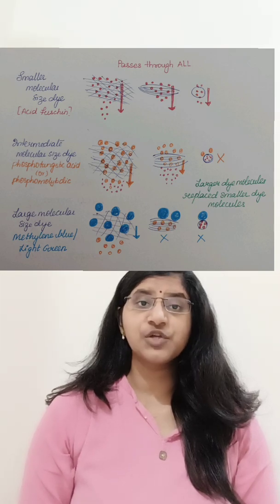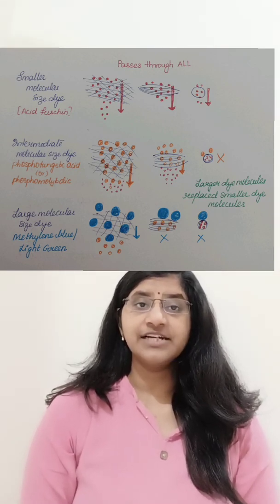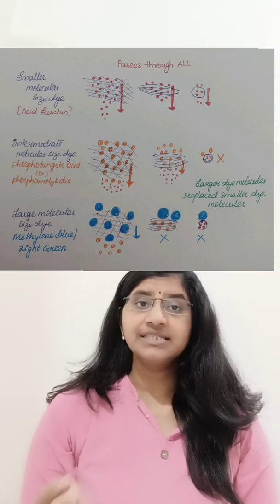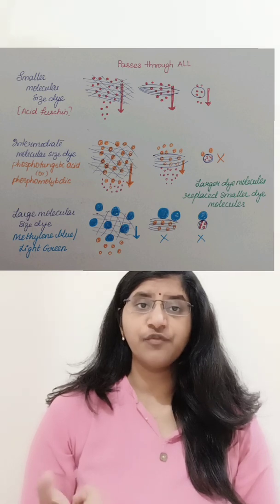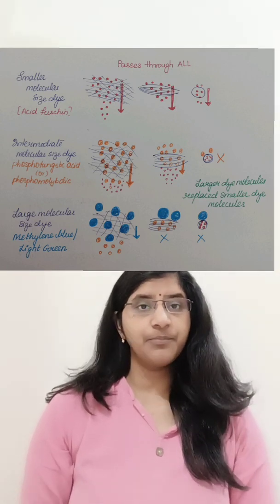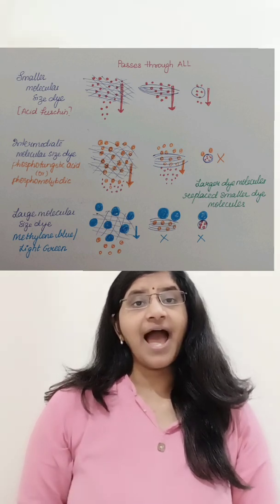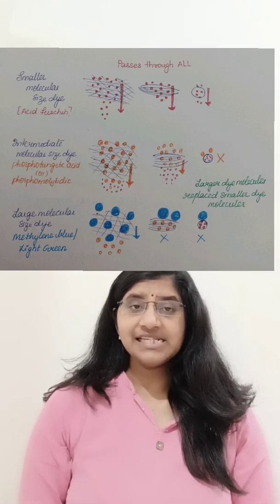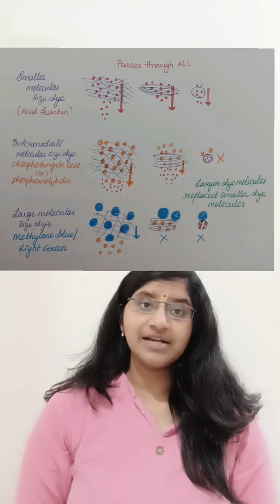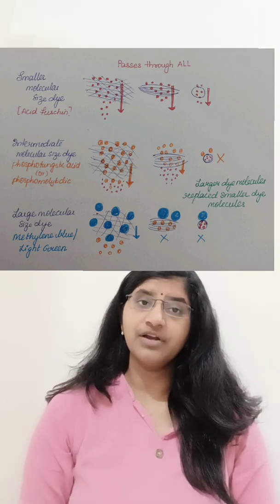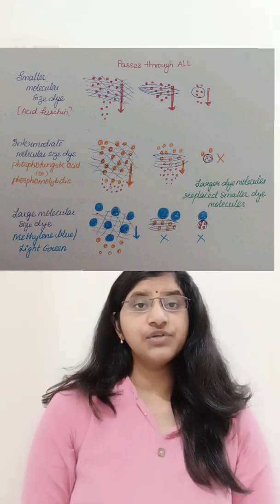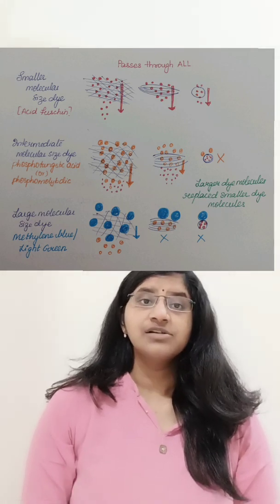We use 3 different dyes of different molecular sizes and charges. First, you apply a small molecular size dye — that is acid fuchsin — which is smaller in size, so it passes through your collagen, muscle, and RBCs. Then you use an intermediate molecular size dye, phosphotungstic acid, which can pass only through your collagen and skeletal muscle but not through RBCs, because the pores on the RBCs are very small. Then we use a larger molecular size dye — either methylene blue or light green — and those bigger dye molecules can only pass through collagen; they cannot pass through muscle or RBCs. So the bigger dye replaces the smaller dye, giving different colours to different structures. This is called selective staining.